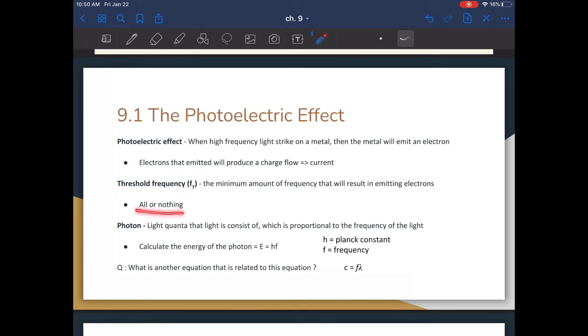This is known as an all-or-nothing event, because as long as the incident light has a higher frequency than the threshold frequency, then emission will occur, and you won't get more emission if you increase the frequency further. And if you decrease the frequency below the threshold frequency, you won't get a little bit of emission or weak emission, you would just get no emission.